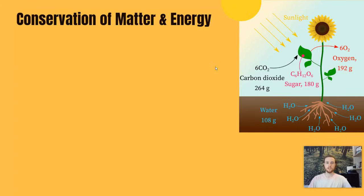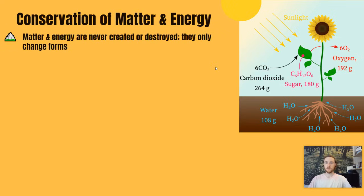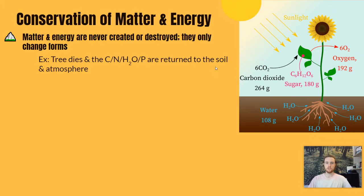Before we talk about how energy flows through ecosystems, we have to establish the conservation of both matter and energy. Matter is never created or destroyed — it only changes forms. This is key to understanding how both matter and energy flow through ecosystems. For example, when a tree dies, it gets decomposed, and we may not see the tree physically anymore, but all of its matter was conserved.